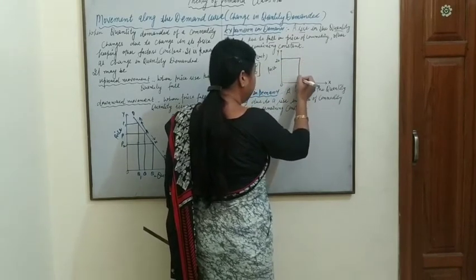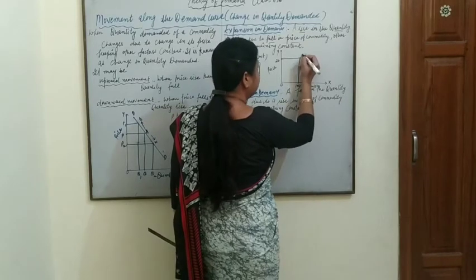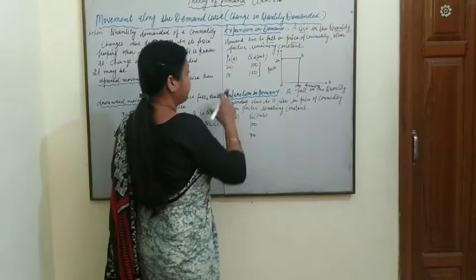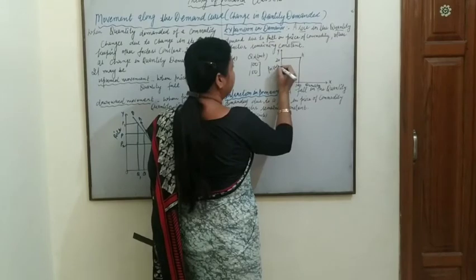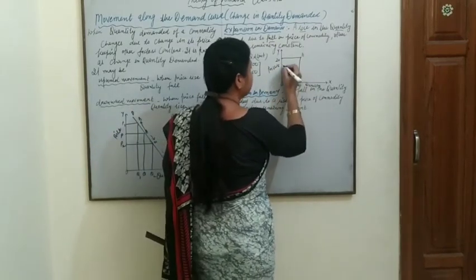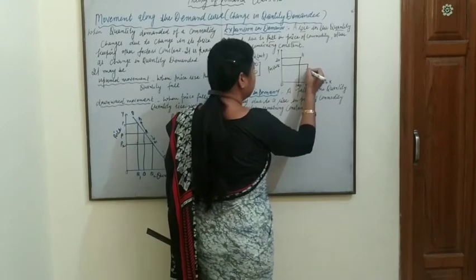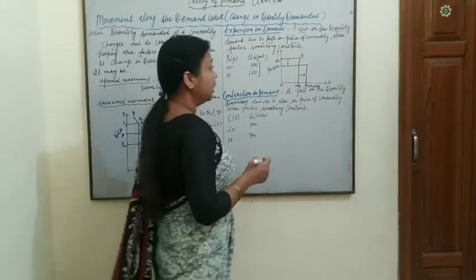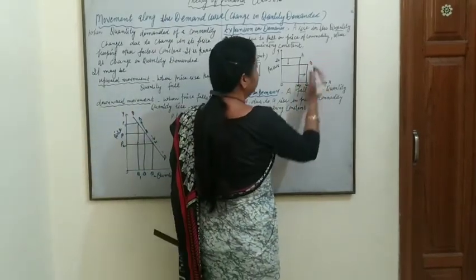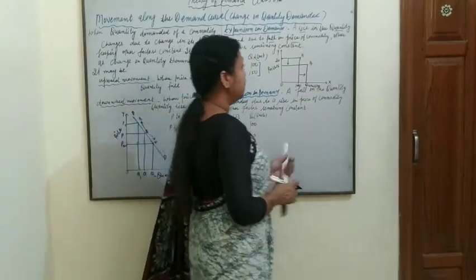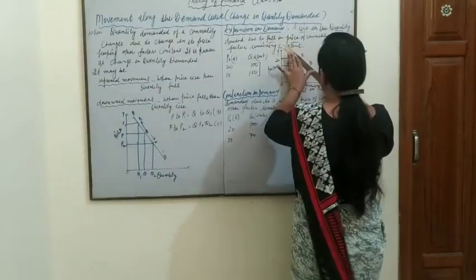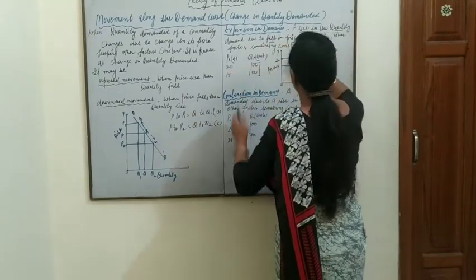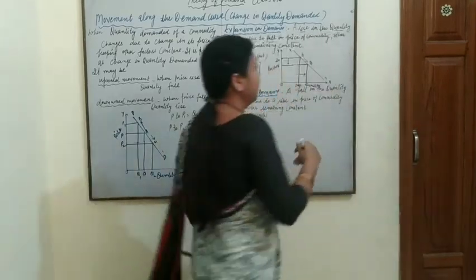At a price of 20 rupees, we are demanding 100 units — this is our point A. Now, if price falls from 20 to 15 rupees, our demand increases. We move from point A to point B, where quantity demanded is more. This movement from A to B is known as extension of demand.